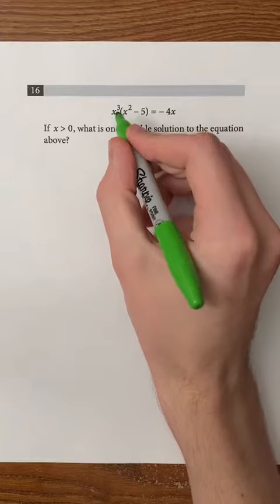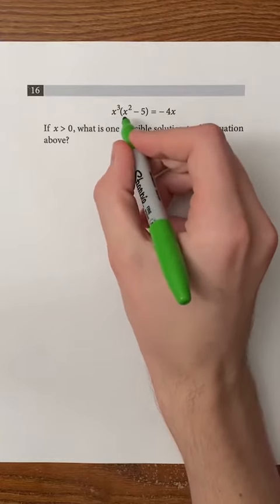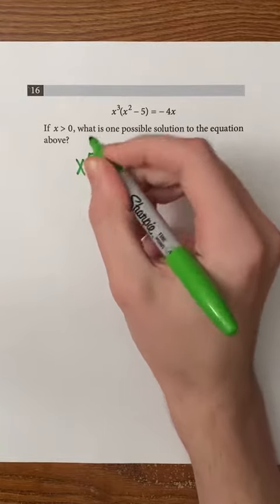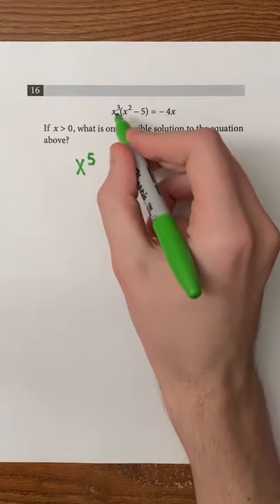First, let's distribute x cubed to x squared minus 5. So x cubed times x squared is x to the power of 5. 3 plus 2 is 5, and we can do this because we have the same base of x.